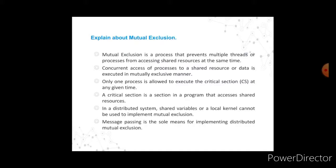The next concept is mutual exclusion. Mutual exclusion is a process that prevents multiple threads or processes from accessing shared resources at the same time. In a distributed system, we have neither shared memory nor a common physical clock, and therefore we cannot solve the mutual exclusion problem using shared variables. A site in a distributed system does not have complete information about the state of the system due to lack of shared memory and a common physical clock.